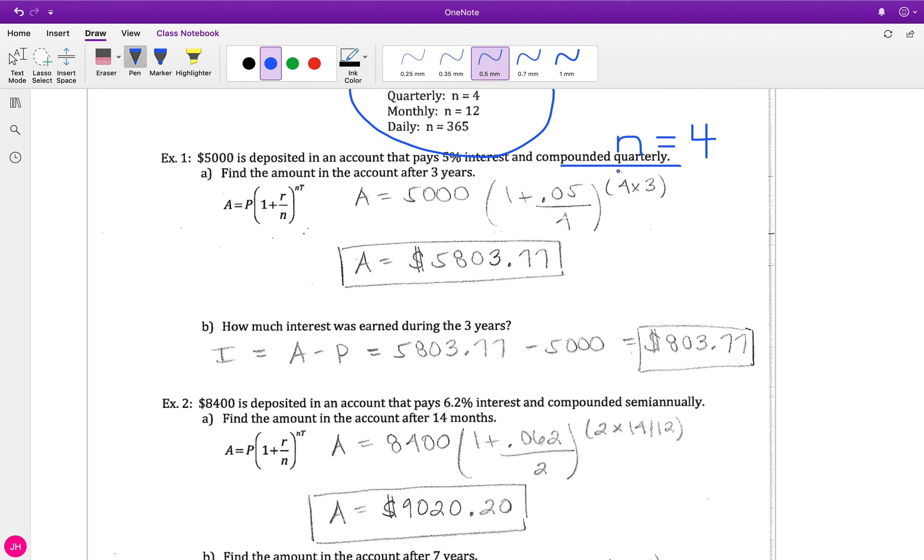Then in the exponent, you need to make sure and put parentheses there. The exponent is four times three - n, which was four, times T, which was three years. Notice these are the same. You want to make sure and type this four times three right here in the exponent, so you need to use your little exponent key - a lot of times that's the carrot button on the calculator.